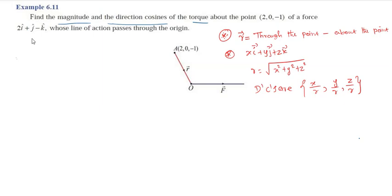Now, if we calculate the r-vector, we calculate the formula: through the point minus about the point — that is, acting point minus about the point. We calculate the origin as the through point: 0i-vector plus 0j-vector plus 0k-vector.